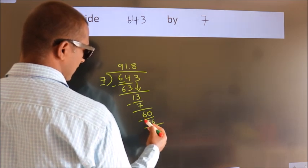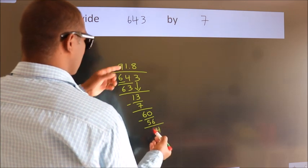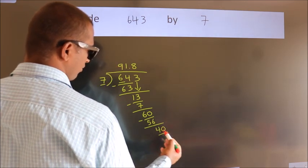Now we subtract. We get 4. After this, we already have the decimal. So directly take 0. So 40.